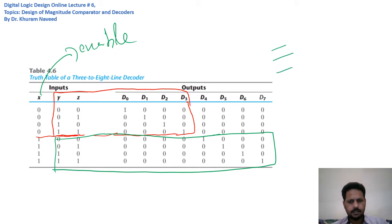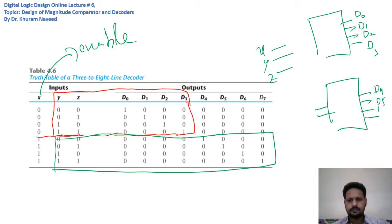with inputs x, y, z as a combination of two two-to-four line decoders. Suppose we have these two two-to-four line decoders with outputs D₀, D₁, D₂, D₃, D₄, D₅, D₆, and D₇.